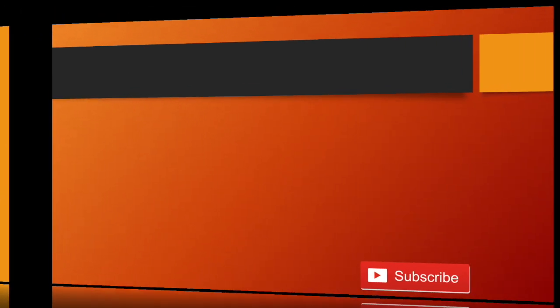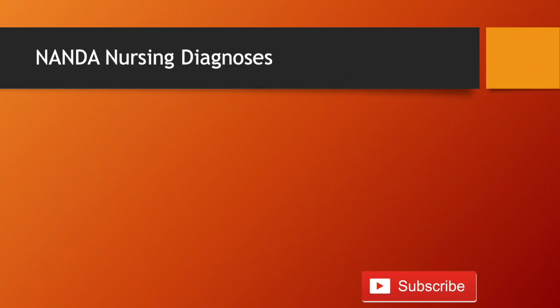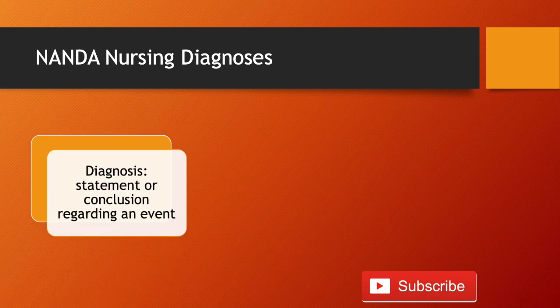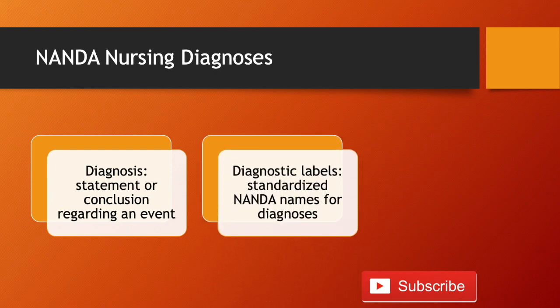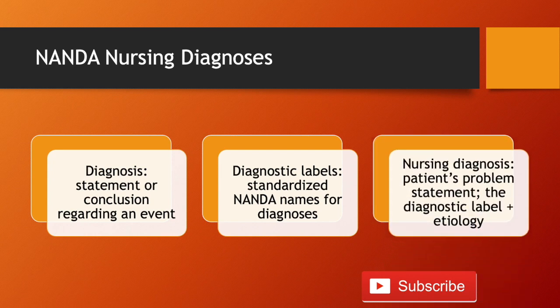Let's talk about NANDA nursing diagnoses. A diagnosis is a statement or conclusion regarding an event. Diagnostic labels are standardized NANDA names for diagnoses. A nursing diagnosis is also called the patient's problem statement — it is the diagnostic label plus the etiology. The etiology is simply the cause or root of the problem.